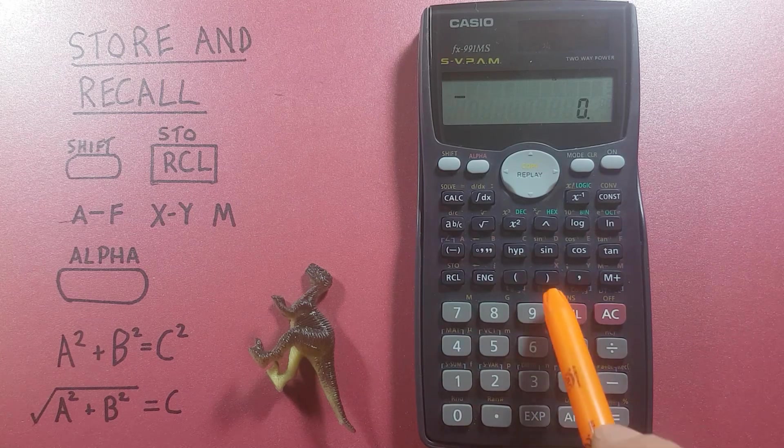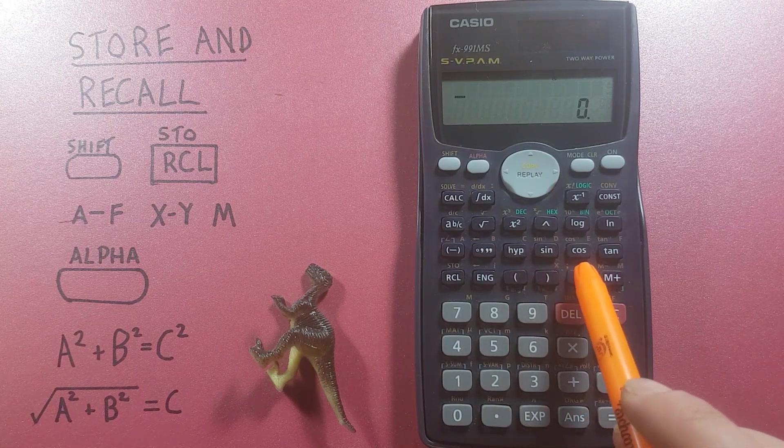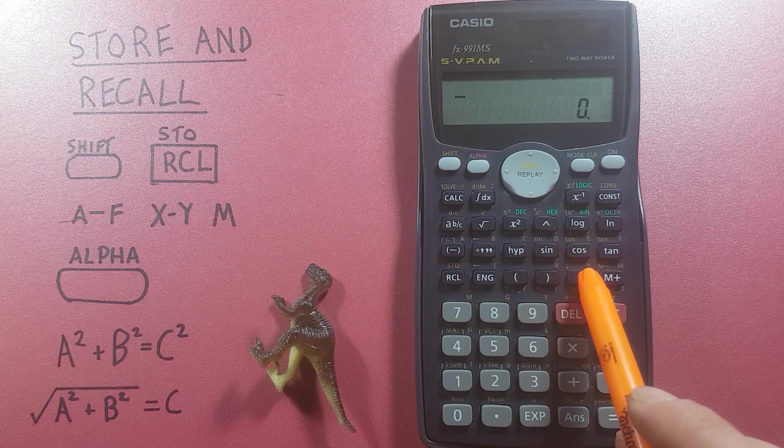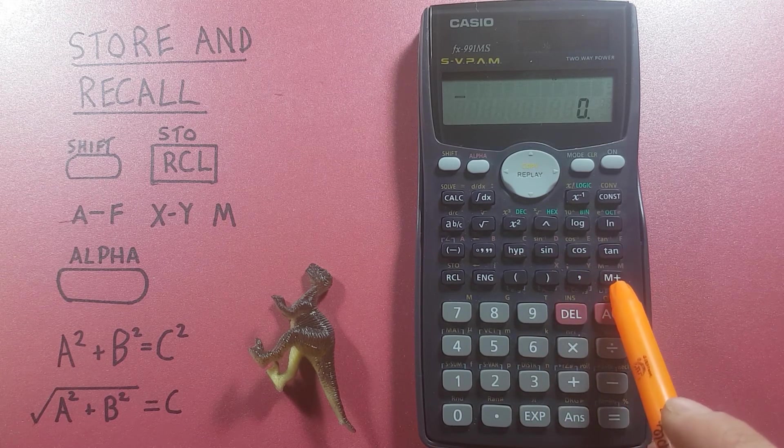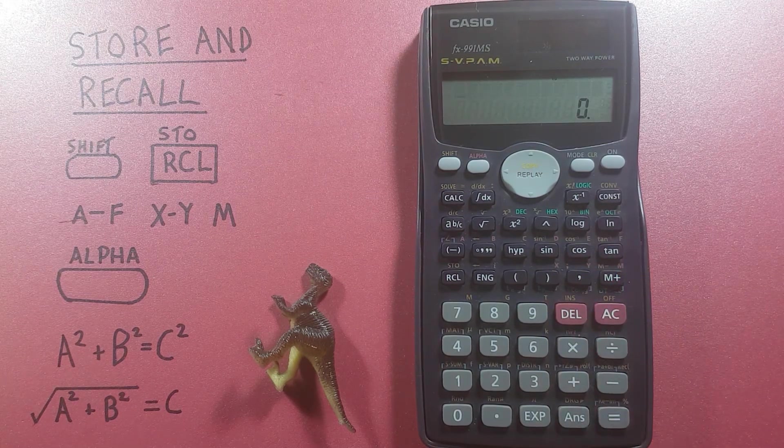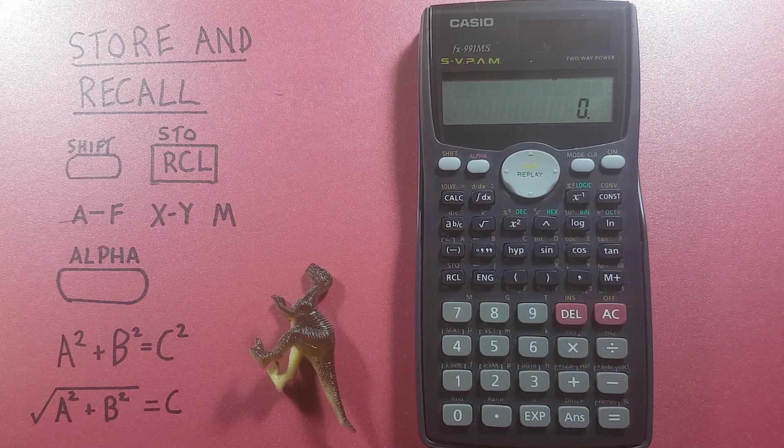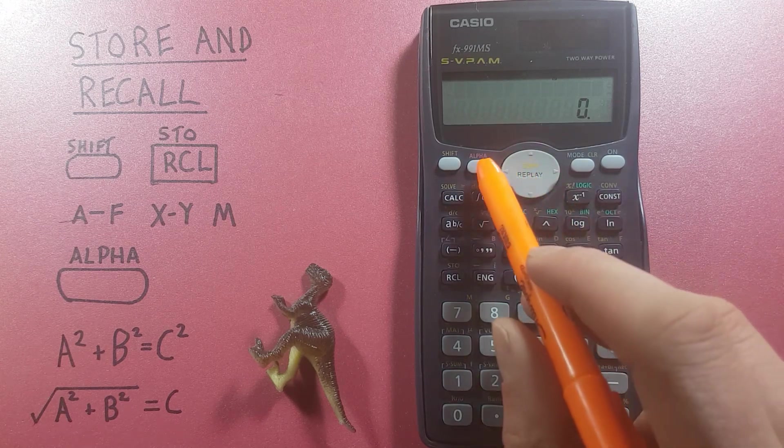The X and Y save slots, again the red X and Y in the top right hand corner, and the M save slot with the red M in the top right hand corner there. We will also be using the alpha key located here.